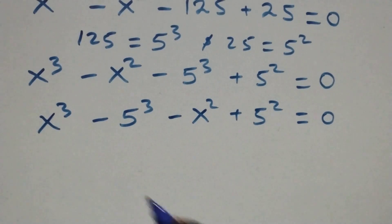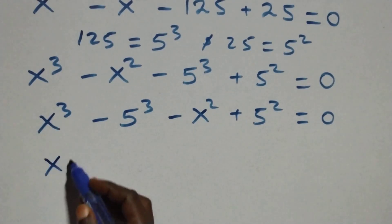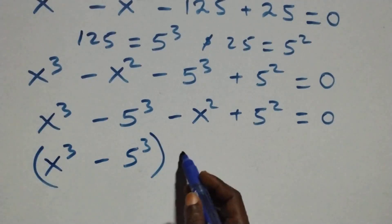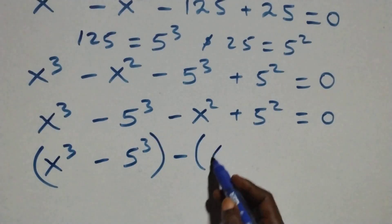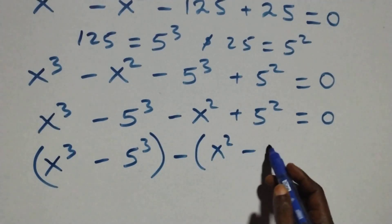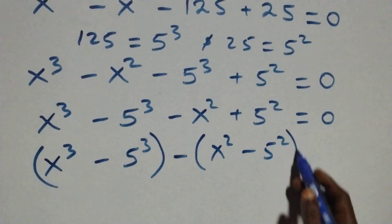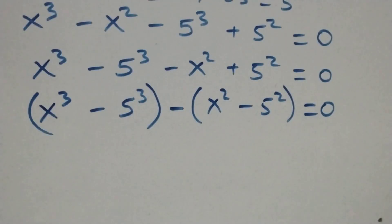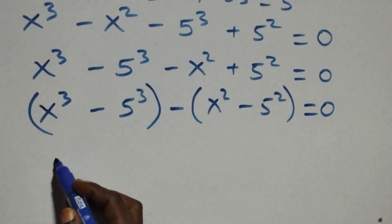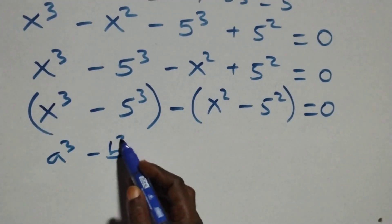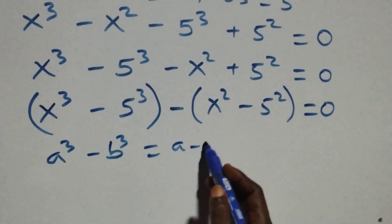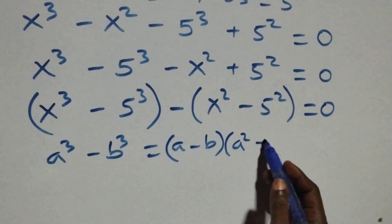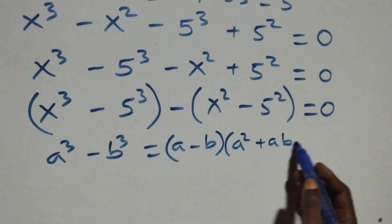Then here, this can be written as (x cubed minus 5 cubed) in brackets, then minus (x squared minus 5 squared) in brackets. And this first bracket follows the identity a cubed minus b cubed, which is the same as (a minus b)(a squared plus ab plus b squared).